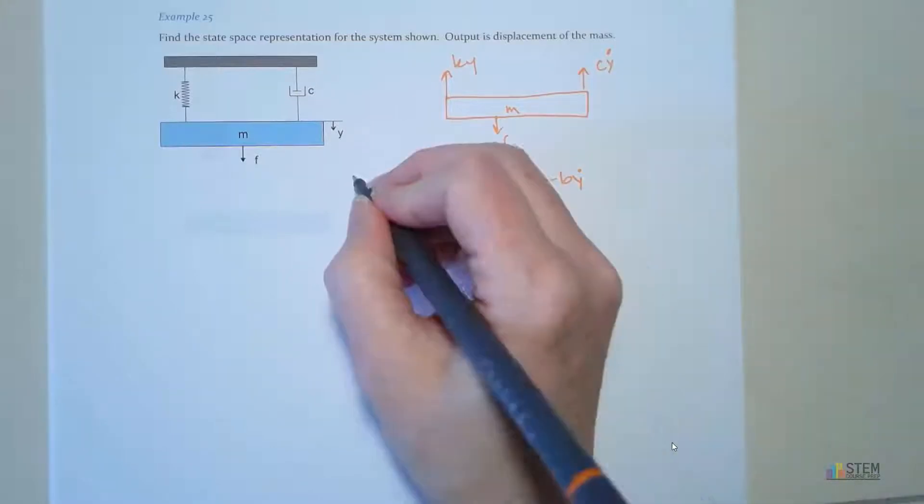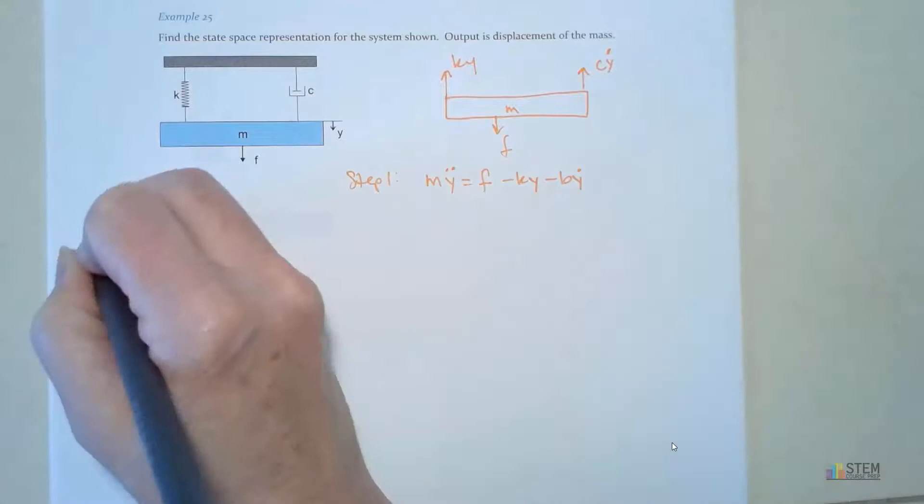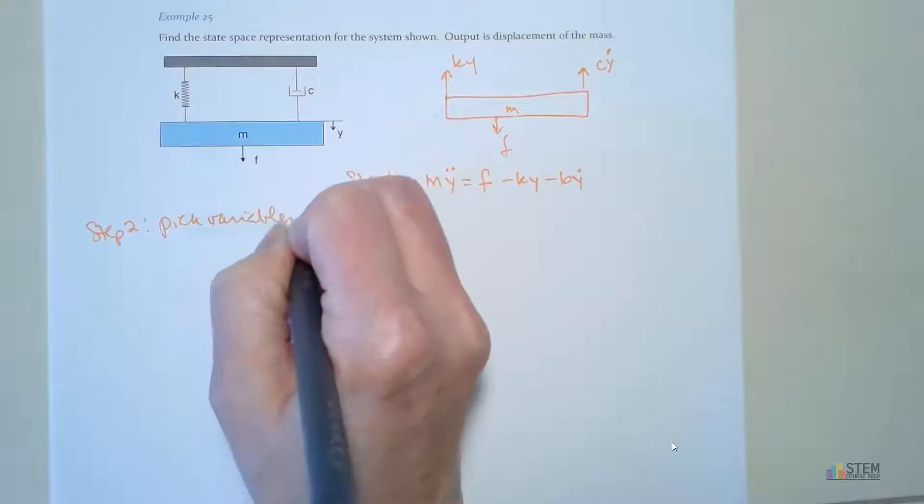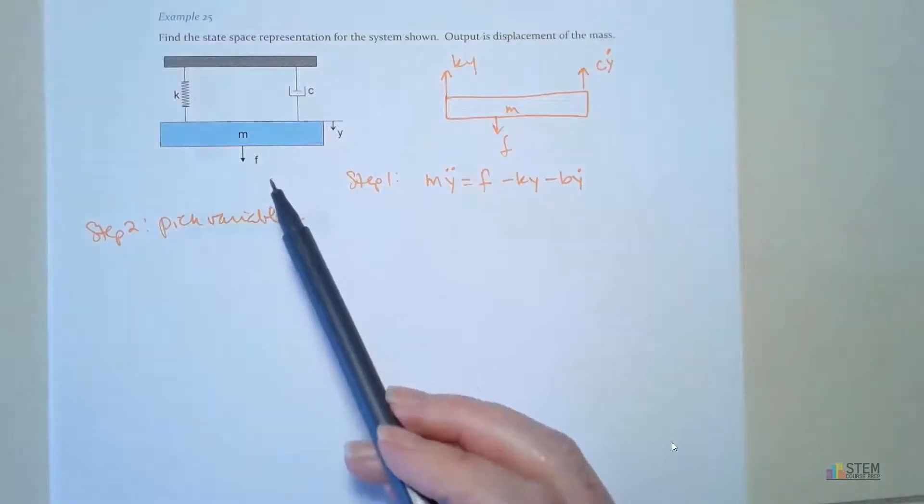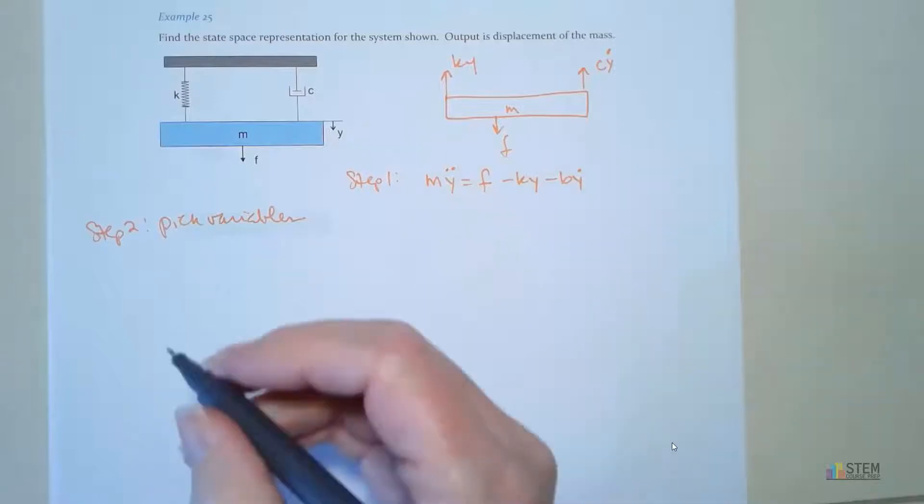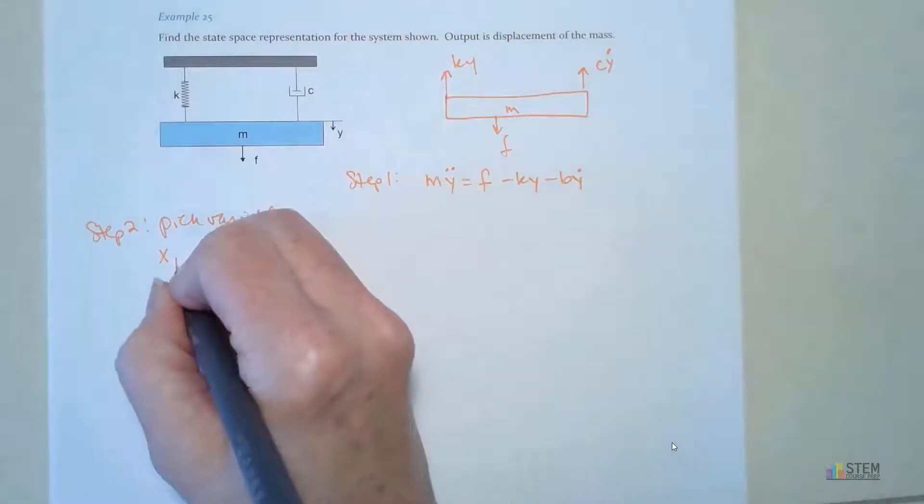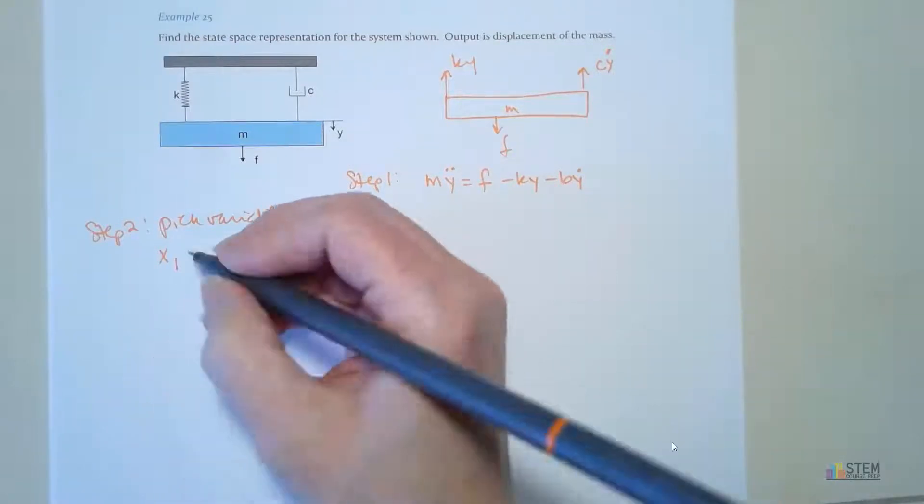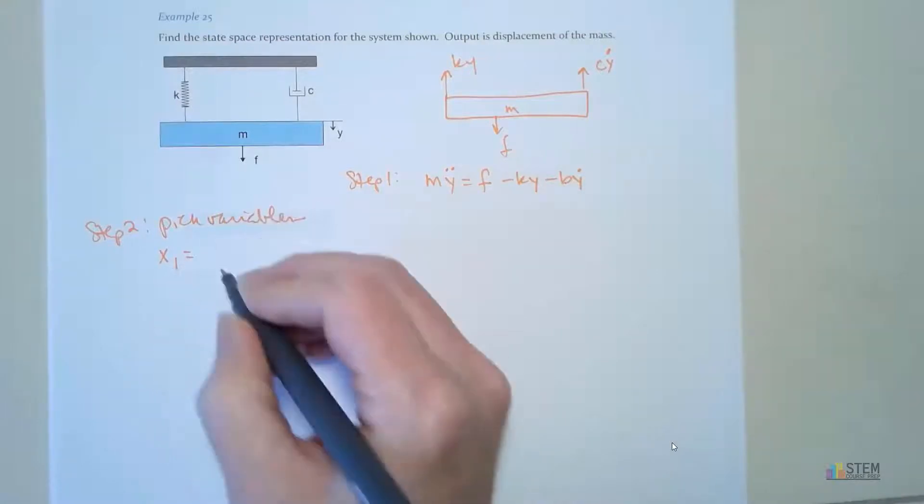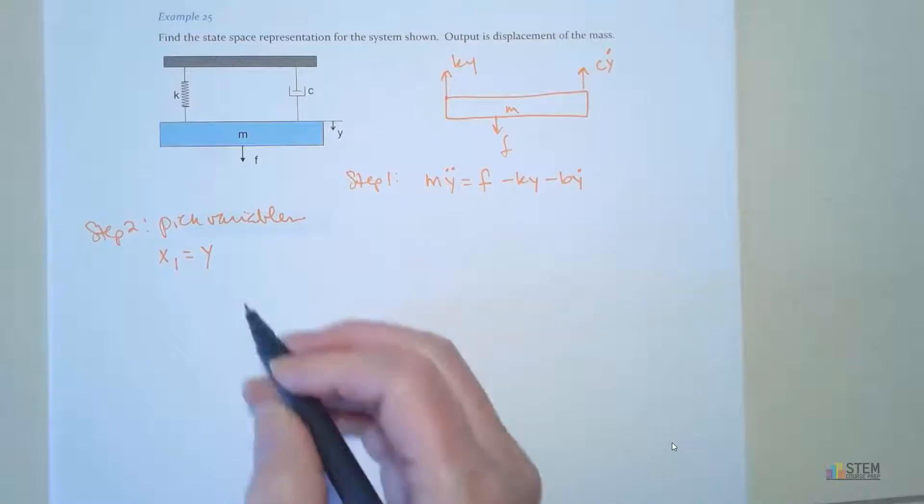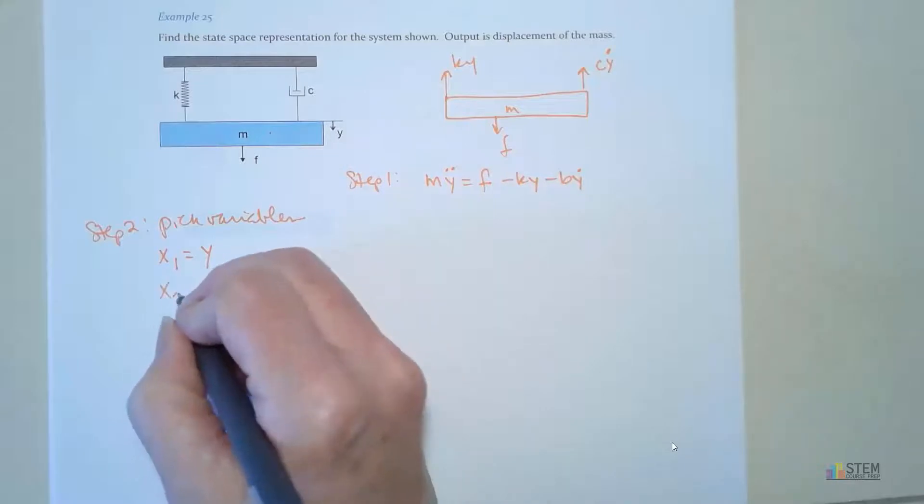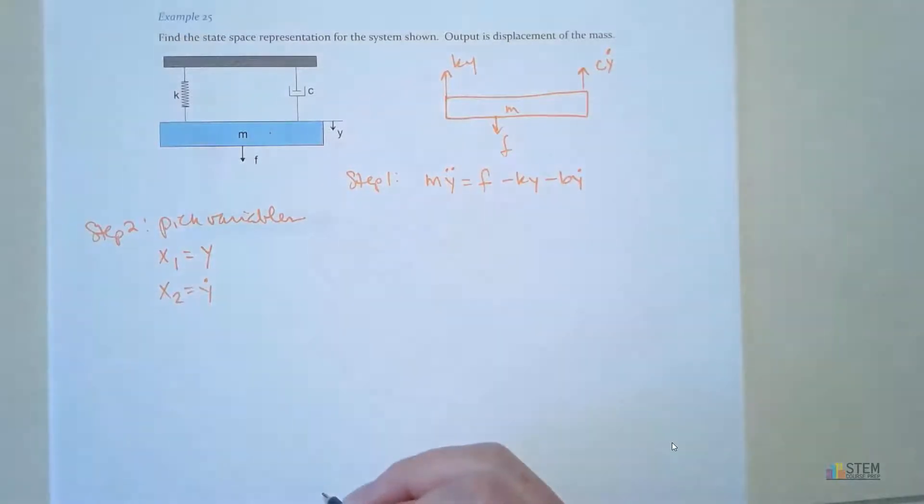Now we have this. Now I need to figure out my variables I want to use. This was step one. Step two, let's pick the variables. Remember, we need a position and velocity for each mass. We only have one mass here, so that means we're going to have x1. You can call it whatever you want - s1, z1, doesn't matter. x1 is going to equal y, so this represents my position or displacement of mass m. x2 is going to be equal to y dot. That means x2 represents the velocity of this mass.